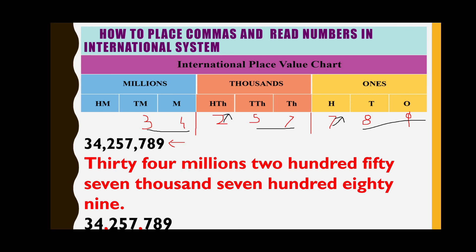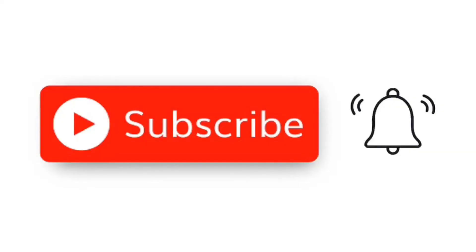In the international system, commas are placed after every three digits from the right. In the Indian system, commas are placed after the first three digits, then after every two digits. This is how we read numbers and place commas in both systems. If you like the video, please like, share, and subscribe. The practice session link is provided — please go through it. Thank you.